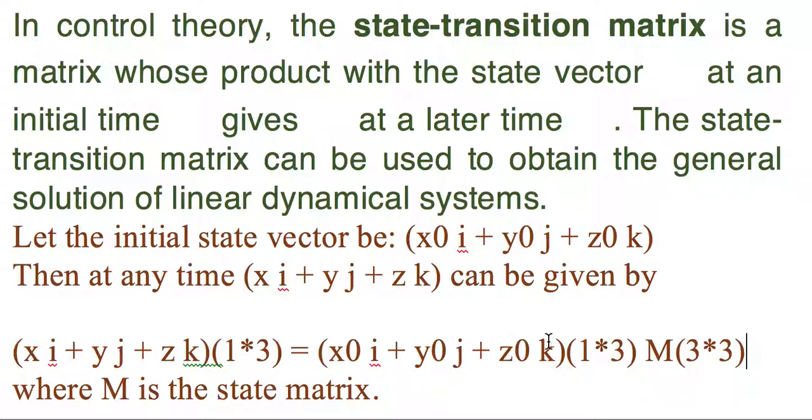So 1 by 3 is the size of the vectors and 3 by 3 will be the size of the state matrix in this case, because this is how the equation is formed.